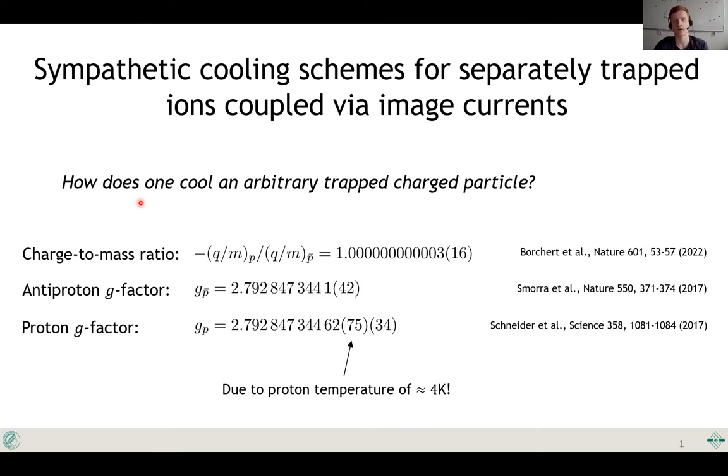For example, our collaboration uses Penning traps to perform high precision measurements on the charge-to-mass ratio and g-factors of the proton and antiproton. If we look at the latest proton g-factor measurement, we see that its uncertainty is dominated by the statistical error. This statistical error actually stems from the finite particle temperature in our trap. So we have an inherent need for a broadly applicable cooling technique.